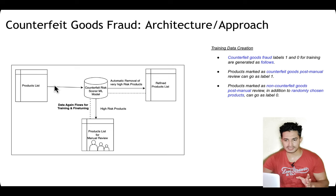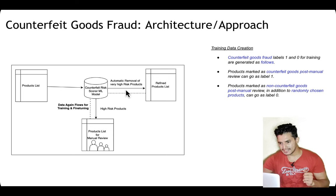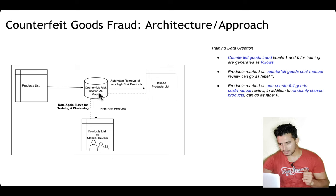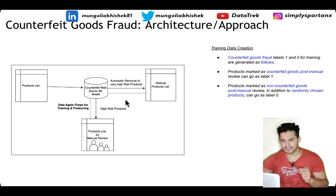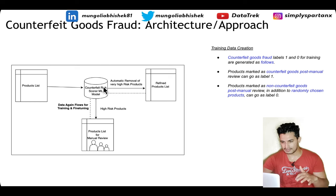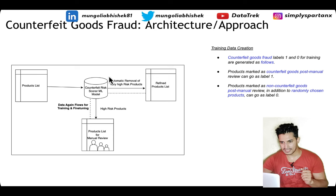The overall architecture: we have all 60 million products on the platform. The risk score module runs once or twice a day. Very high risk products are automatically removed. High-to-medium risk products go for manual review. The outcomes from both the manual review — whether a product is counterfeit or not — and the automatically removed high-risk ones flow back to the counterfeit score module for retraining and fine-tuning, making the model better and better over time.